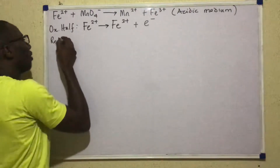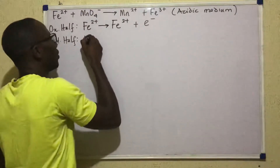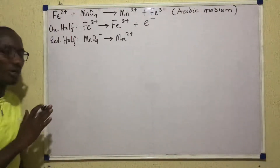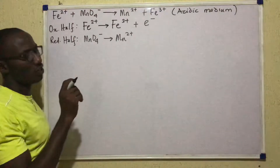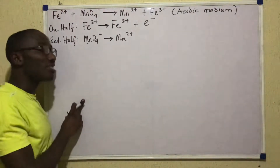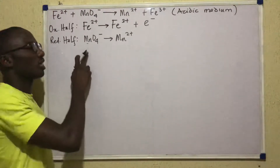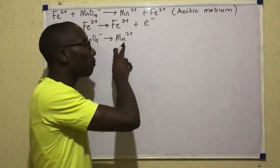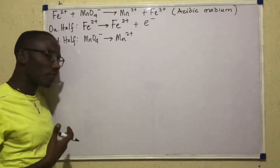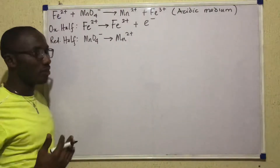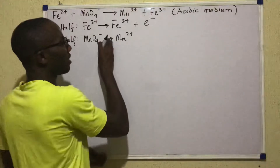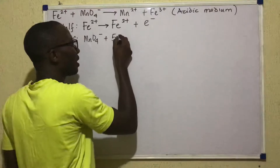Now to the reduction half. MnO4− becomes Mn2+. If you calculate the oxidation number of manganese in MnO4−, you obtain +7. So this manganese is deficient in 7 electrons, but by the end of this change the manganese has a deficiency of only 2 electrons — meaning it must have gained 5. From basics, reduction is electron gain. So I'm going to write 5e− on the left, giving Mn2+ on the right.